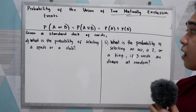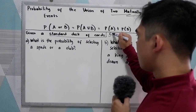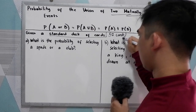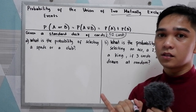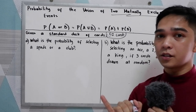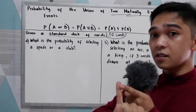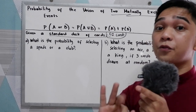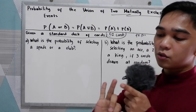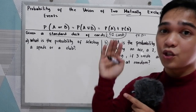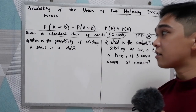To further understand, let's have this problem. Given a standard deck of 52 cards — we have 4 cards for aces, 4 cards for 2s, 4 cards for 3s, and so on: A, 2, 3, 4, 5, 6, 7, 8, 9, 10, Jack, King, and Queen — that is 4 times 13, a total of 52 cards. What is the probability of selecting a spade or a club?